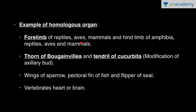Examples of homologous organs include the forelimbs of reptiles, aves, and mammals, and the hind limbs of amphibia, reptiles, aves, and mammals. The forelimbs of these three classes all have a similar bone structure: humerus, radius, ulna, metacarpals, carpals, and phalanges. These may show different functions, but all have similar internal bone structure — that is why these are homologous organs.